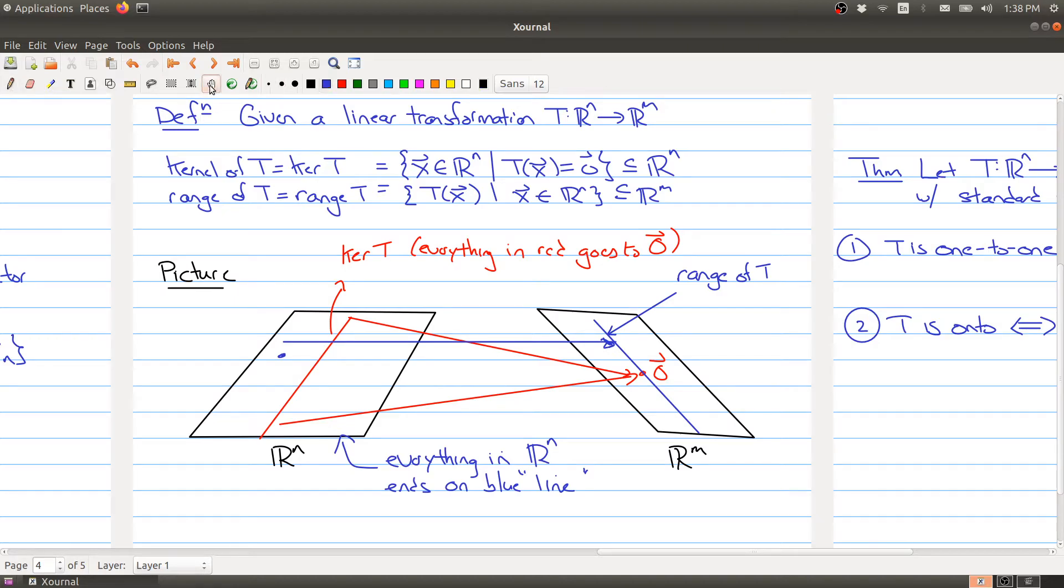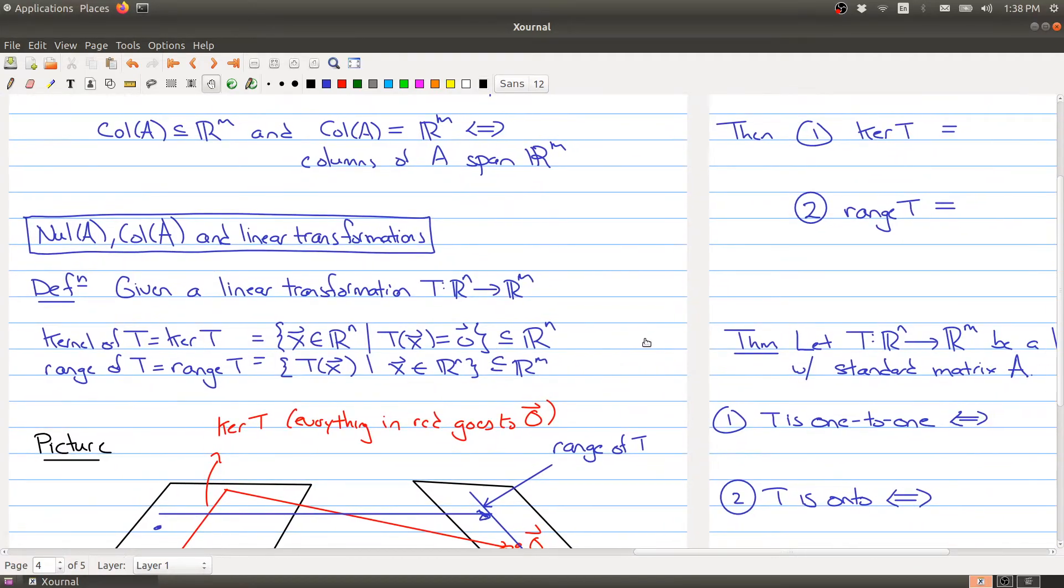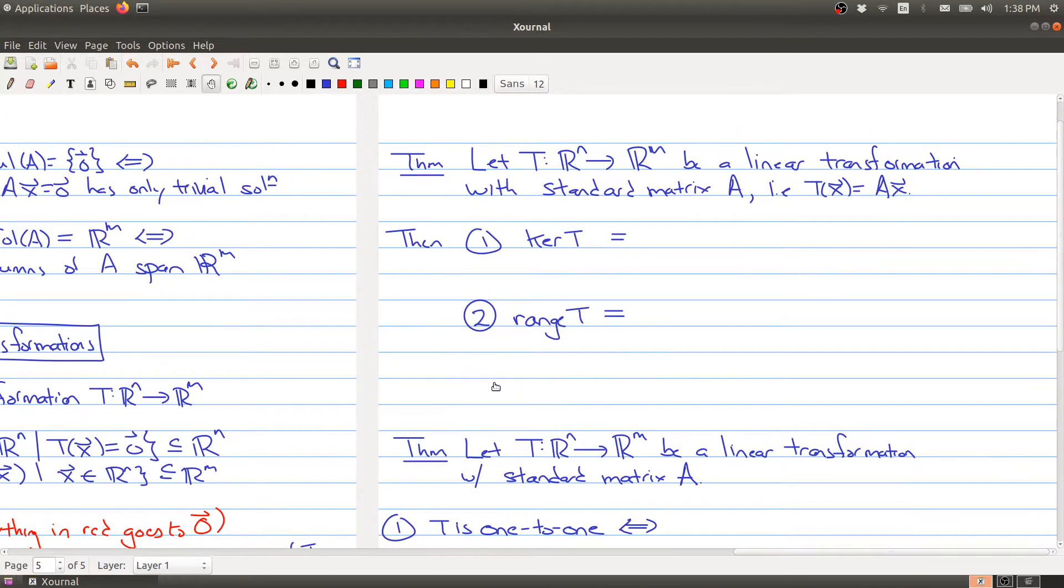So we know, and hopefully this is a point you've picked up as we're going along, is that whenever you have a linear transformation, there's really a matrix hiding in the background, namely the standard matrix. So whenever you have a linear transformation, you can find a matrix A such that plugging in the x is the same thing as multiplying the x by A.